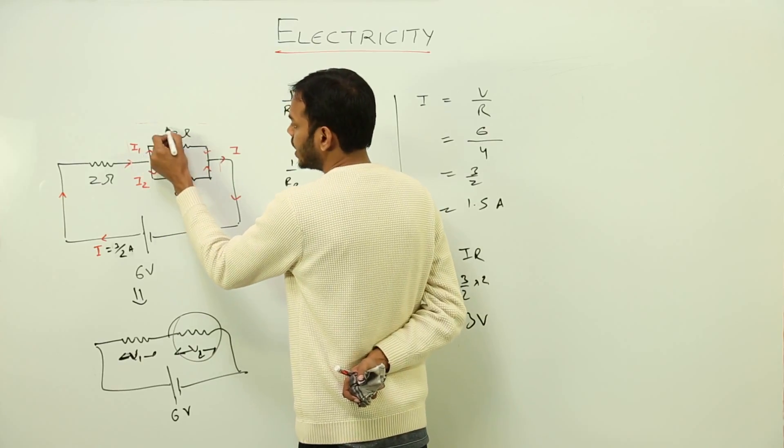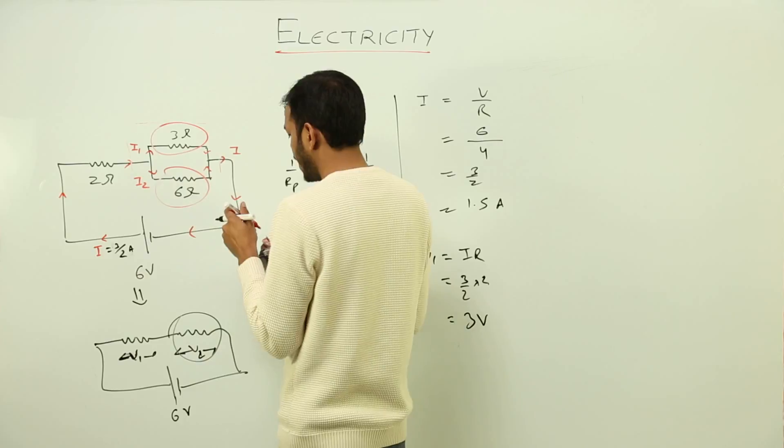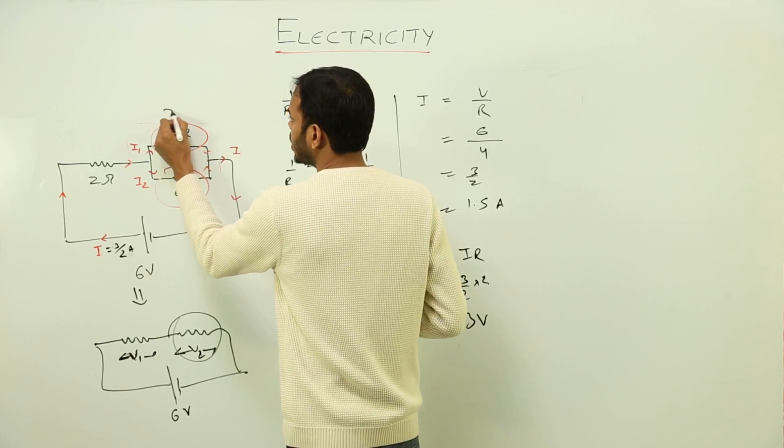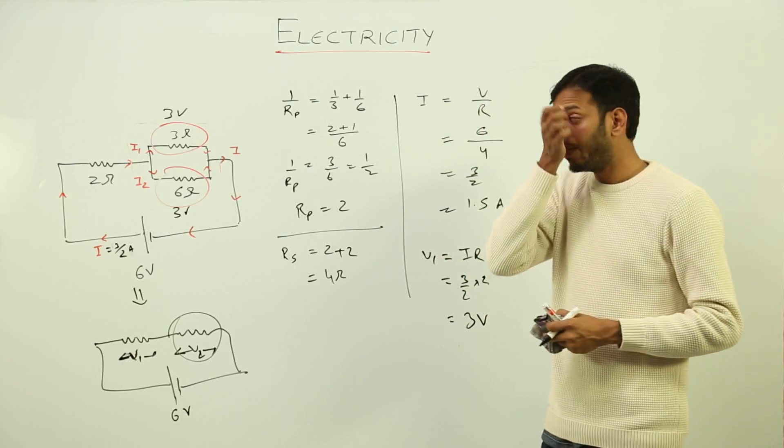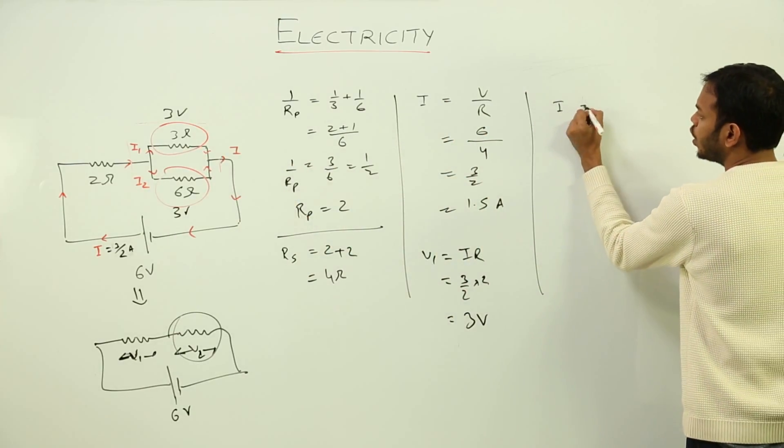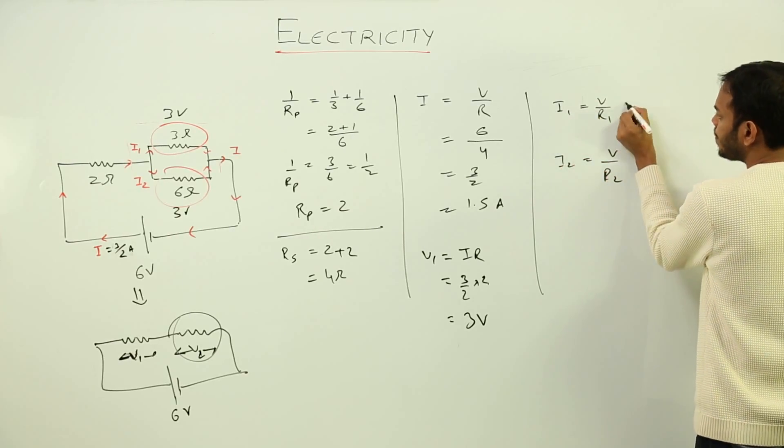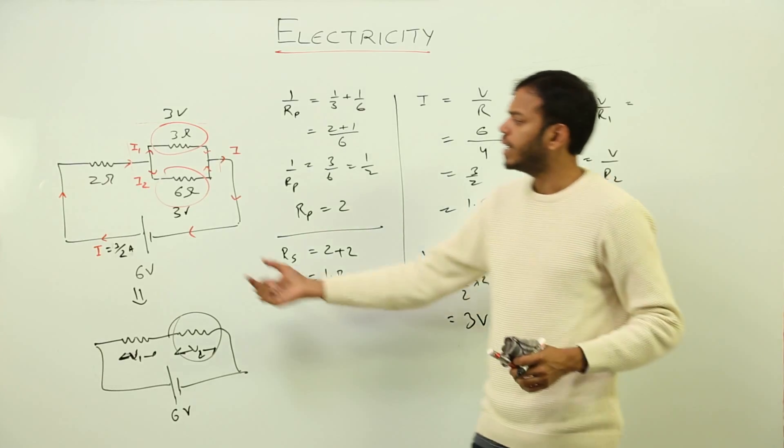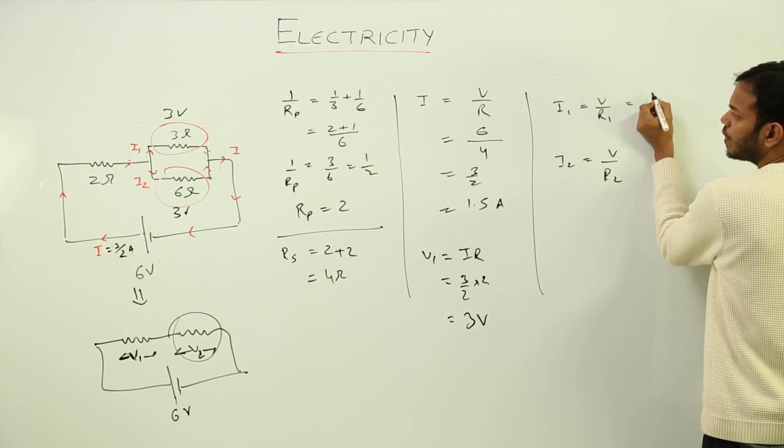So 3 volts is supplied to both this and this. In parallel, voltage is equal. This has also received 3 volts and this has also received 3 volts. So now we can calculate the value of current, which is I1. I1 is equal to V upon R1, and I2 is equal to V upon R2.